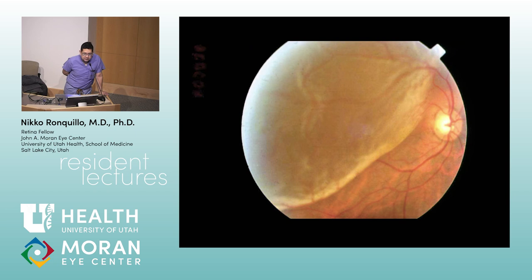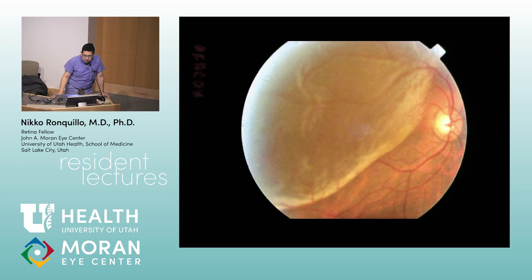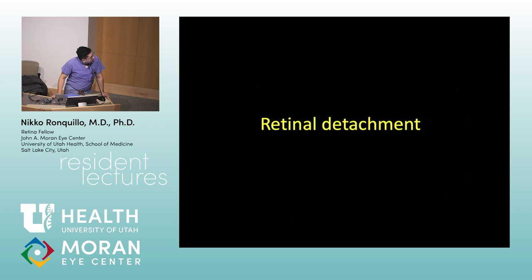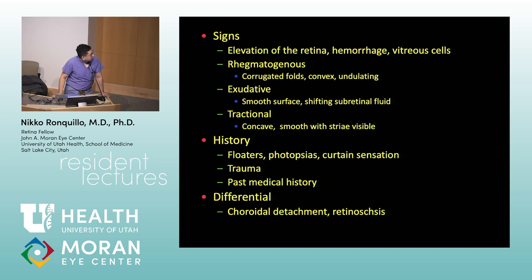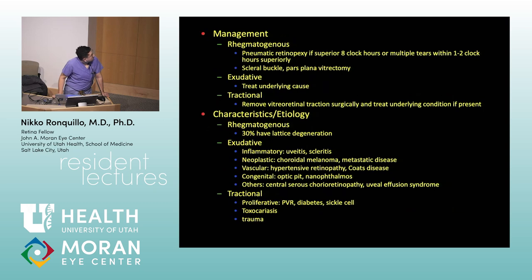Retinal detachment versus retinoschisis: in retinal detachment you get a relative scotoma; in retinoschisis the layers are split, so there is an absolute scotoma. When you laser retinoschisis there is whitening, but in retinal detachment the laser burns normally. The three types of retinal detachment — rhegmatogenous, exudative, and tractional — are well known; surgical approaches are typically not asked about in OCAPS.